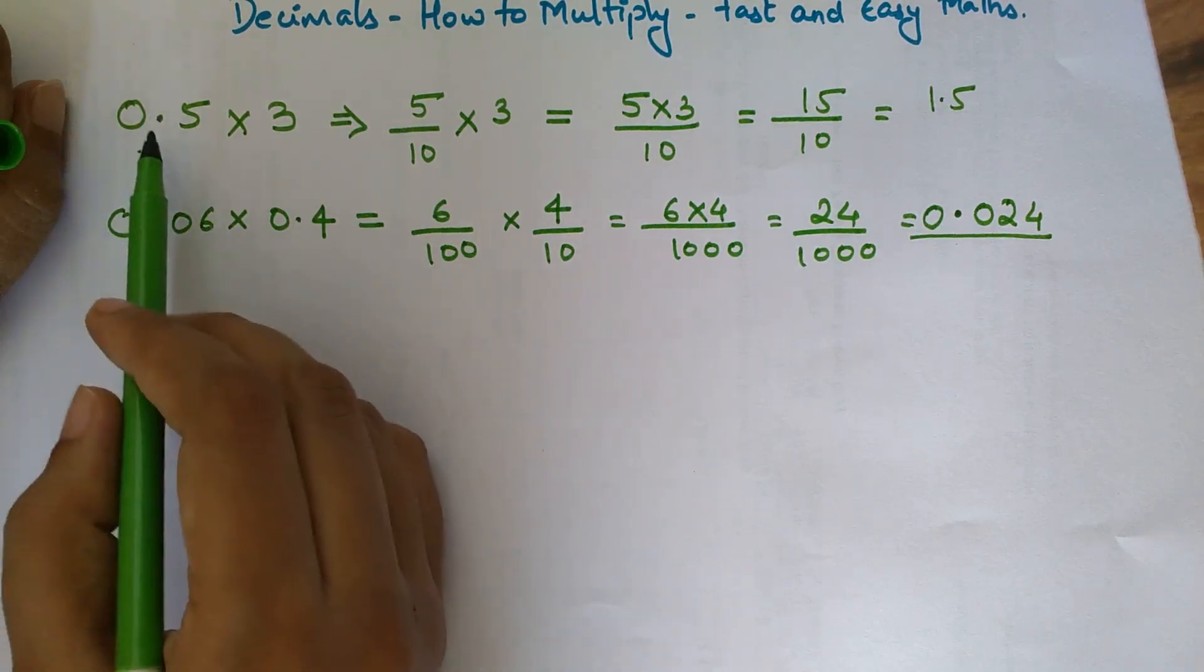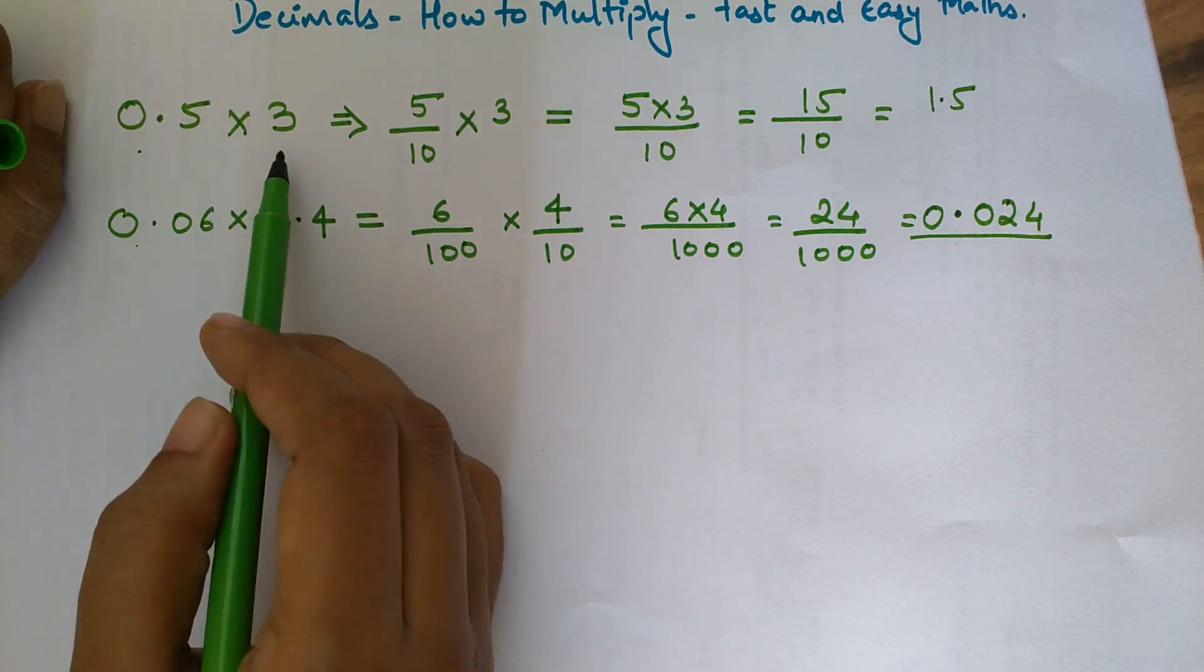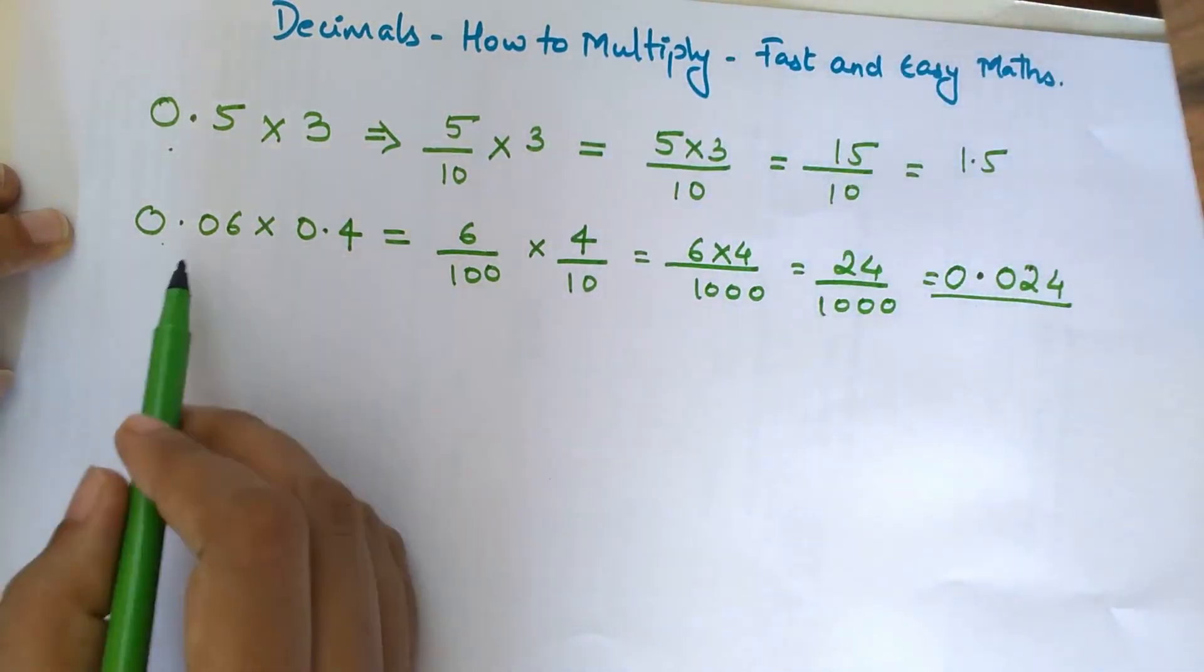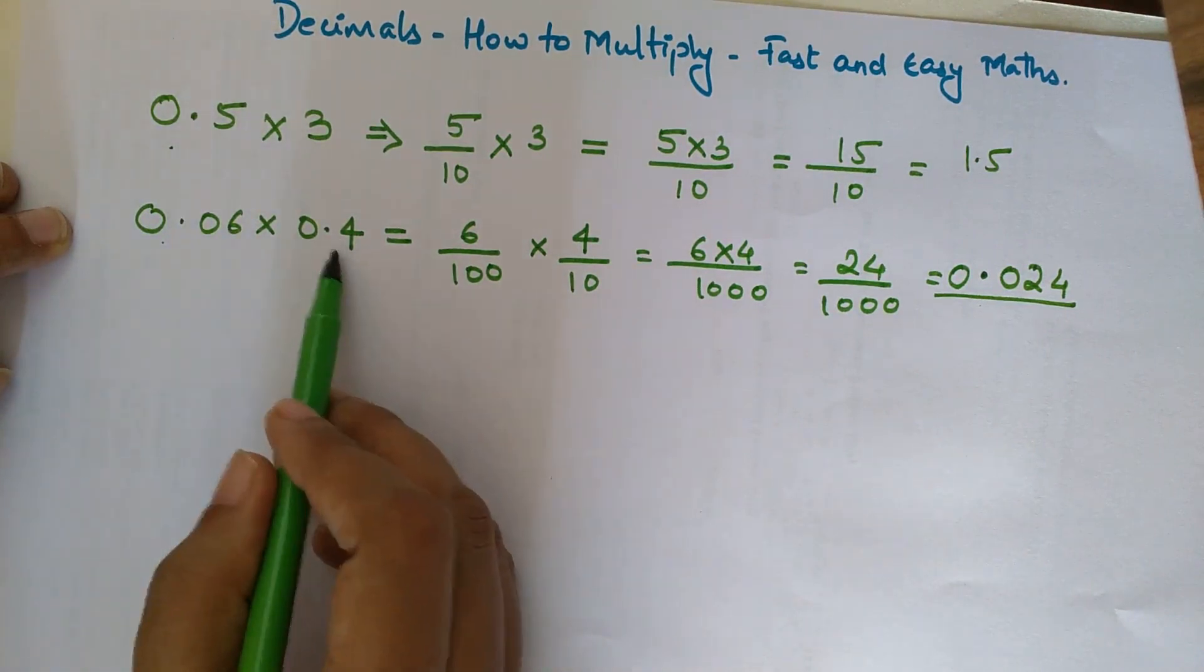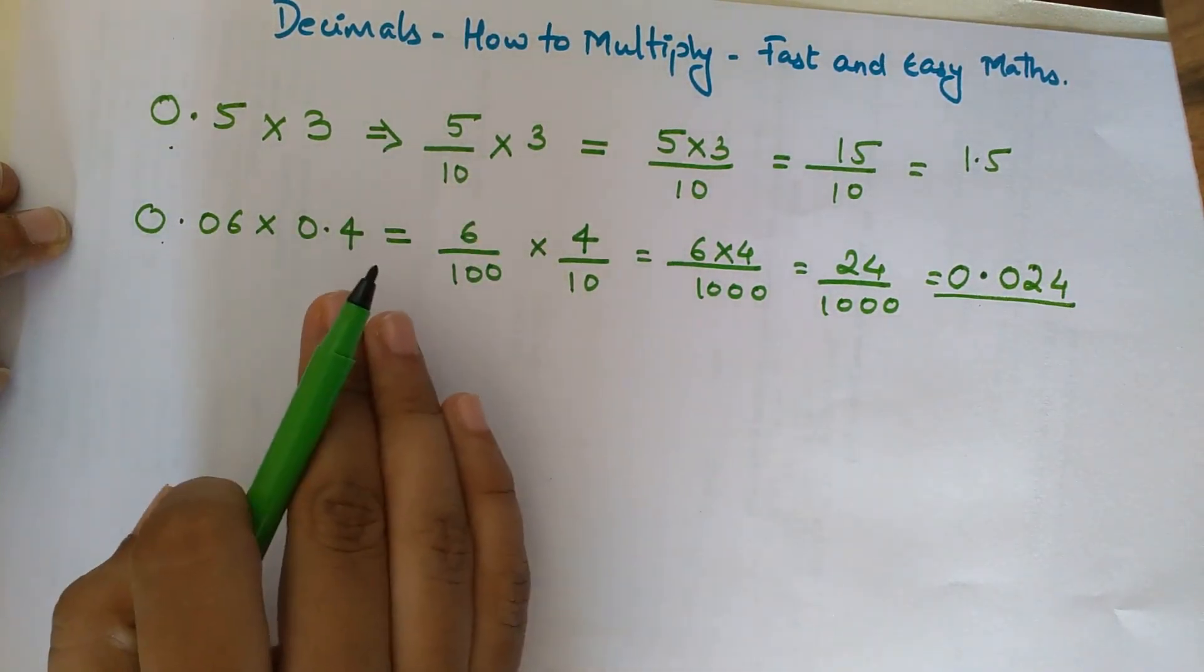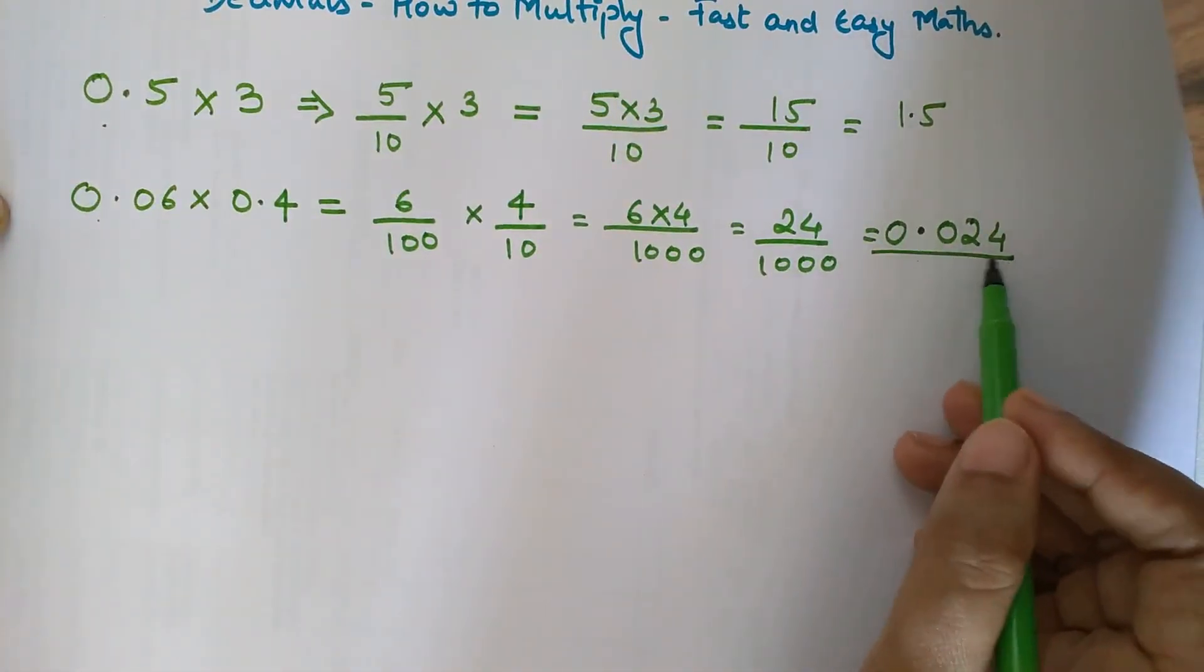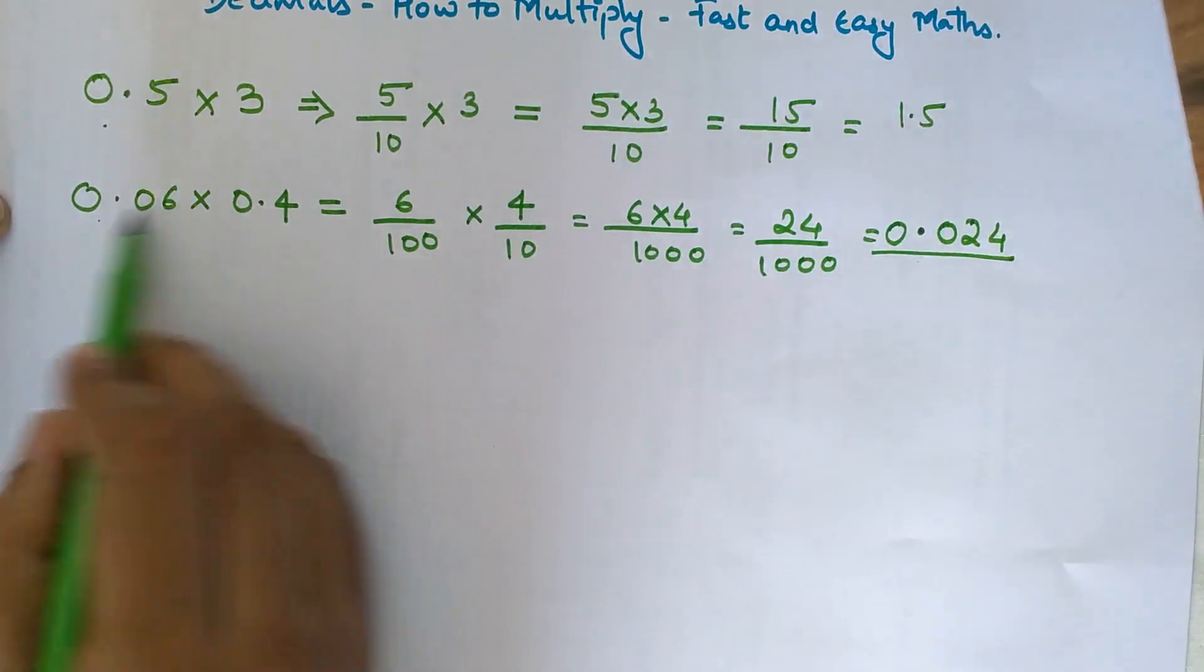In the first example, there was just one digit after the decimal point in the entire multiplication, so the final answer also had just one digit after the decimal point. Here we have two digits and one digit, so three digits in total after the decimal point, and the final answer also has three digits after the decimal point.